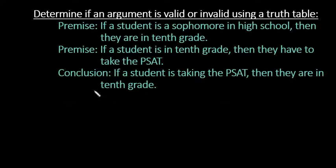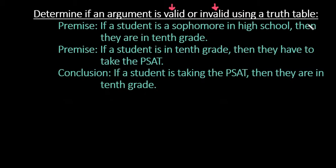For this video, what I want to do is show you how to determine if an argument is valid or invalid using a truth table. In order to be valid, at the end of the truth table, you have to end up with all true statements, which is known as a tautology. In order to be invalid, if you can show that it's false at any point, then it is going to be an invalid argument.